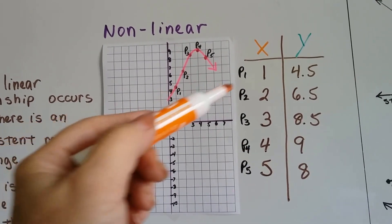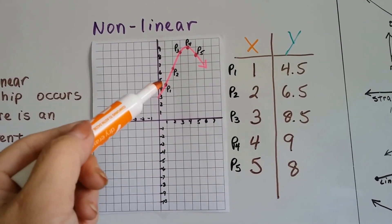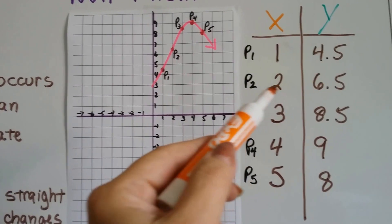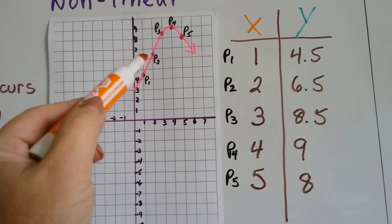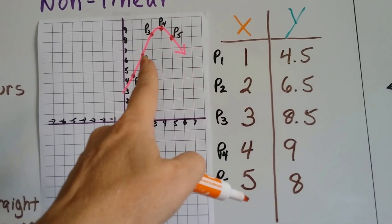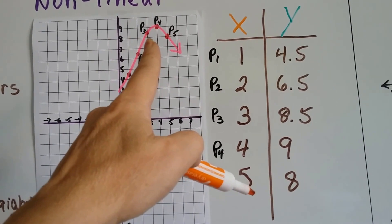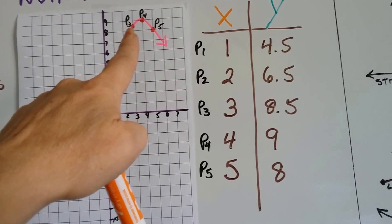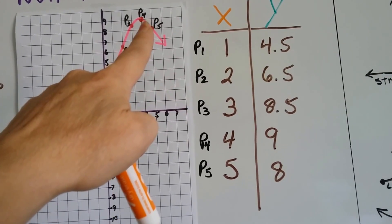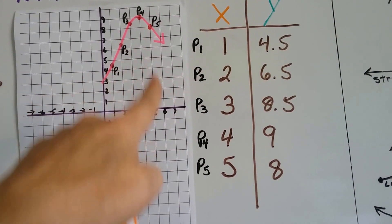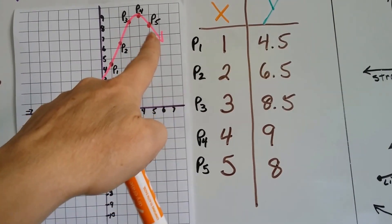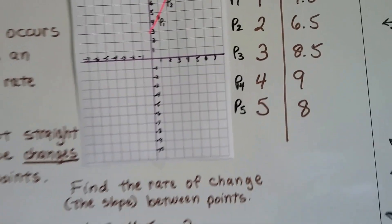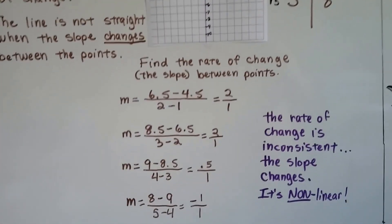For point 1, we have x = 1 and y = 4.5. For point 2, x is 2 and y is 6.5. Then it's on x = 3 and y = 8.5. Then it goes to 4 and 9 — that was inconsistent. Then it goes to x = 5 and y = 8, so it went back down. That wasn't very consistent. And we can prove this by finding the rate of change, the slope between the points.